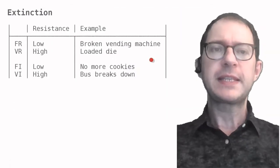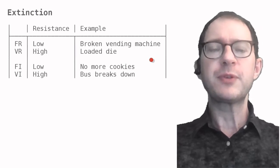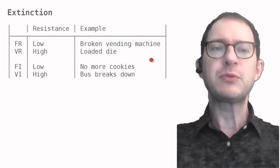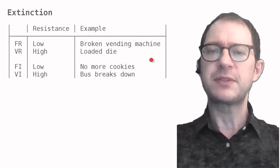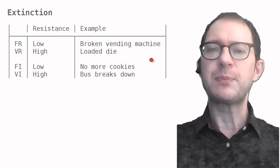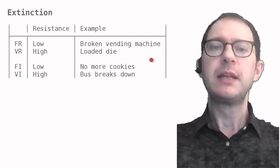Another important effect of schedules is how resistant to extinction a behavior is. Recall from our lessons on Pavlovian conditioning that the word extinction refers to what happens when the reinforcer becomes unavailable. Typically, the behavior that was trained stops, and this is true in both Pavlovian and instrumental conditioning.